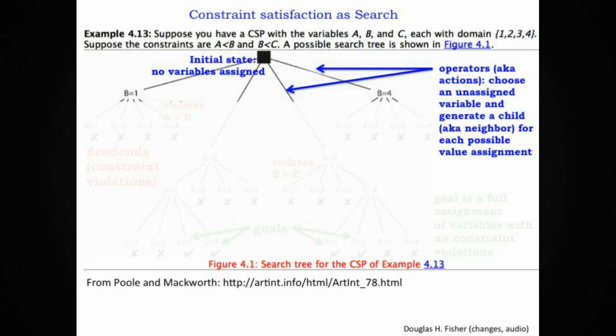What we want to do is find all the assignments of A, B, and C, or if you prefer, at least one assignment for A, B, and C that satisfies these constraints.